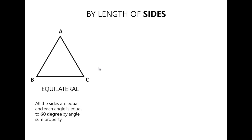The first triangle is the equilateral triangle. The name itself is pretty descriptive — 'equi' means equal. As the name says, all the sides and angles in an equilateral triangle are equal, and each of the angles is 60 degrees. That is, side AB, side BC, and side AC are equal, and angle A, angle B, and angle C are each equal to 60 degrees.